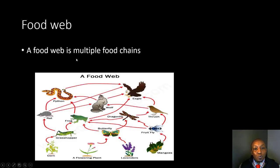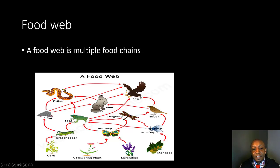A food web is multiple food chains. If you look at this picture, you can see multiple food chains and multiple ways where one organism is eating another organism, which then gets eaten by another. Notice that the organism at the very top — the eagle — has no other organism feeding on it because it's a tertiary consumer.